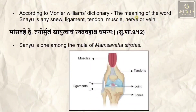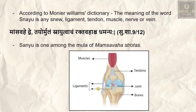According to the Monier Williams dictionary, the word snayu means any ligament, tendon, muscle, nerve, or vein. It may be a muscle, a ligament, a joint, or a tendon — we cannot correlate snayu as a single particular structure of the body.